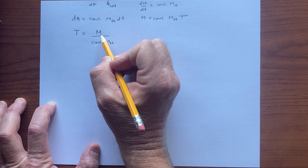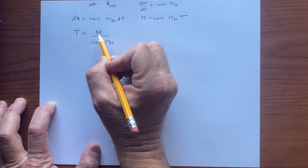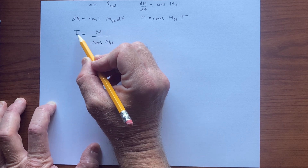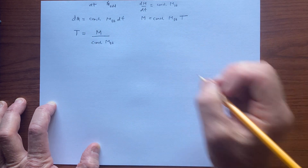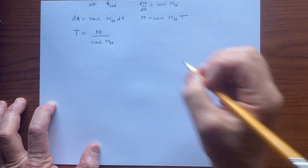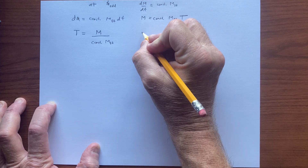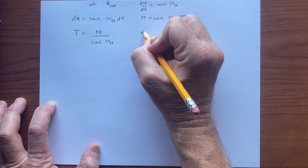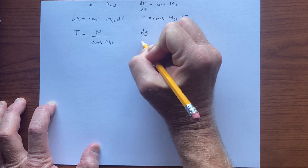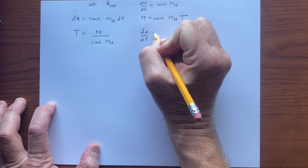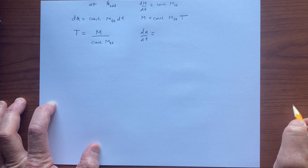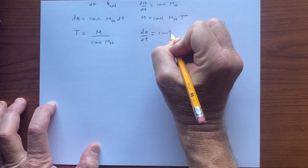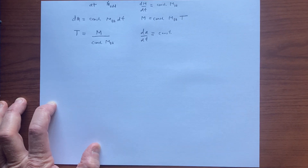It's not surprising that the greater M is, the greater the time — we need more time to add more mass. We also showed that at the Eddington accretion rate, dA, the rate at which the dimensionless black hole spin changes, is a constant — it's not a function of the mass of the black hole.